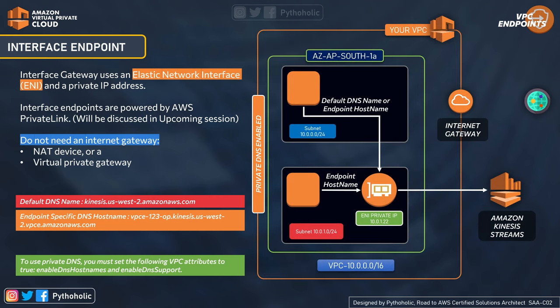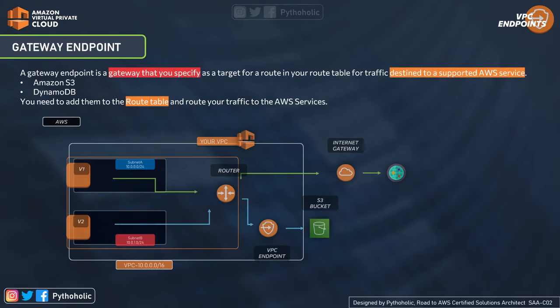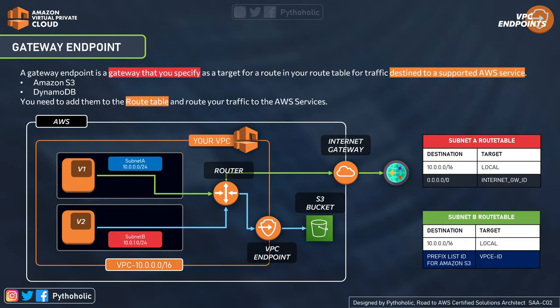To enable private DNS, you must set two VPC attributes to true: 'Enable DNS Hostnames' and 'Enable DNS Support.' This way, if you don't want to use the private IP address directly, you can use DNS names instead.